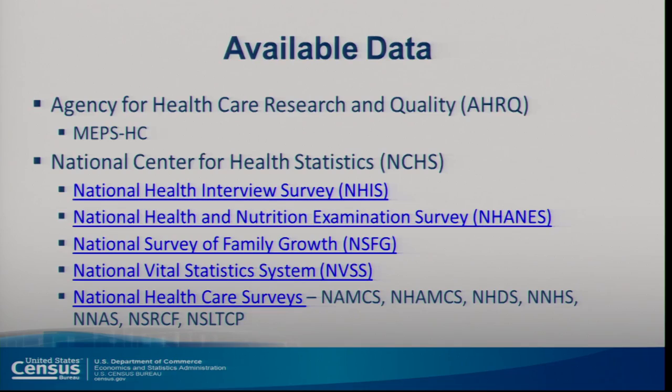For health data, available datasets include the MEPS household component from the AHRQ agency — very easy to get access to, and they get results back to you typically the same day. From the National Center for Health Statistics we have the NHIS, NHANES — which includes physical exams, blood tests, and detailed health measurements on a smaller sample — Survey of Family Growth, National Vital Statistics System, and National Health Care Surveys.